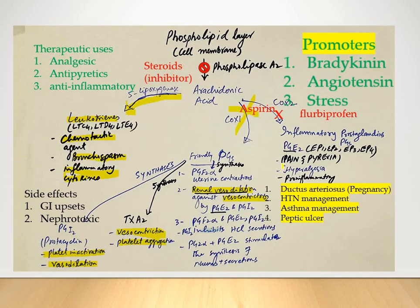It is important that for antipyretic purposes, the effect is very predominant especially in patients having pyrexia. In normal individuals, NSAIDs are not going to produce antipyretic effects or a further fall in body temperature, because the vasodilation phenomenon is very evident in patients having high-grade fever.